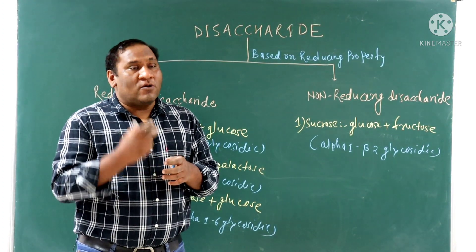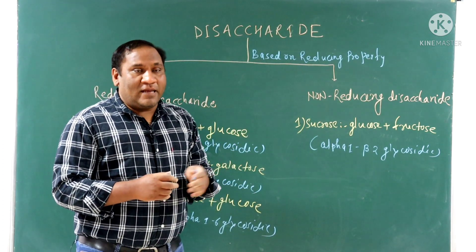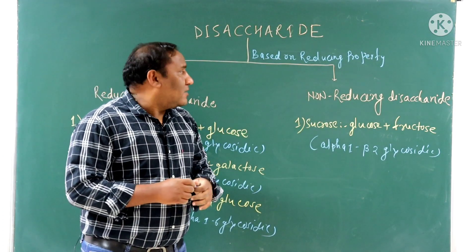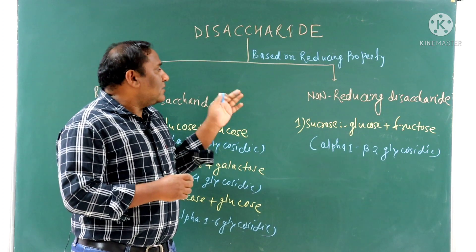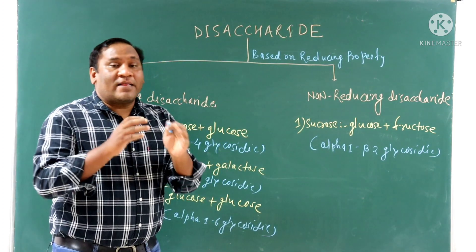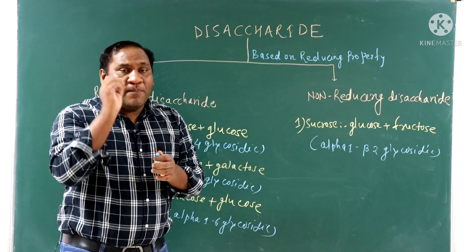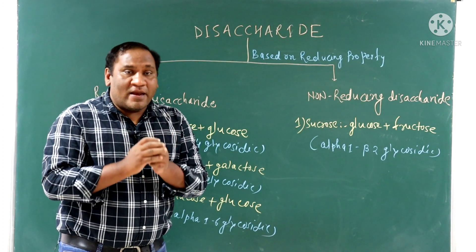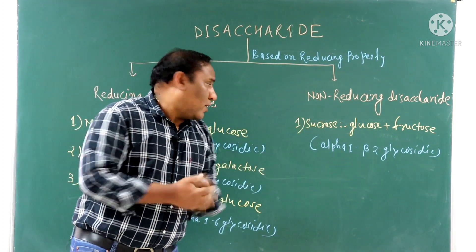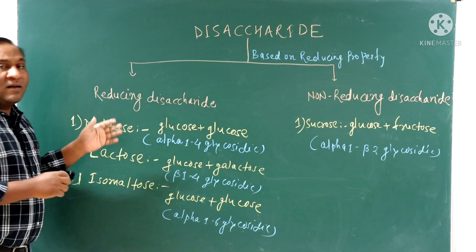Disaccharides contain two monosaccharides joined by a glycosidic bond. Disaccharides are subdivided based on their reducing nature. Reducing disaccharides have a free aldehyde or keto group and can reduce cupric ions in Benedict's reagent. Benedict's reagent is used to distinguish between reducing and non-reducing sugars.